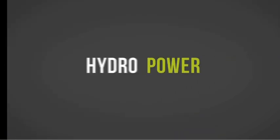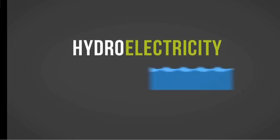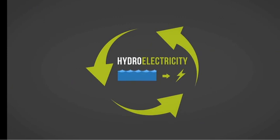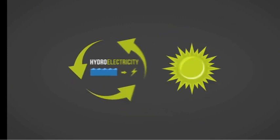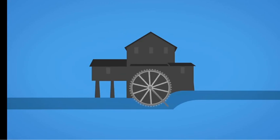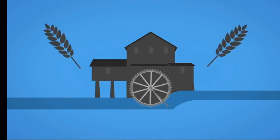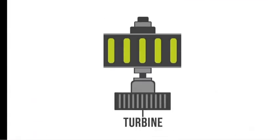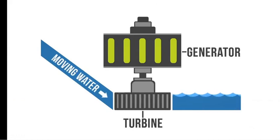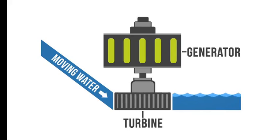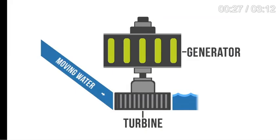Hydropower, or hydroelectricity, refers to the conversion of energy from flowing water into electricity. It is considered a renewable energy source because the water cycle is constantly renewed by the sun. One of the first uses of hydro energy was for mechanical milling, such as grinding grains. But today, modern hydro plants produce electricity using turbines and generators. The mechanical energy created by moving water spins rotors on a turbine, which is connected to an electromagnetic generator that produces electricity when the turbine spins.